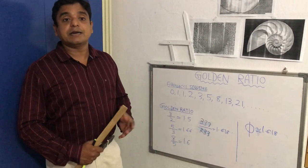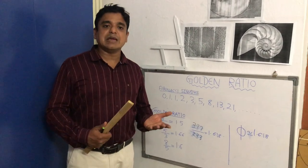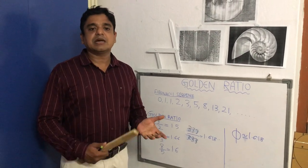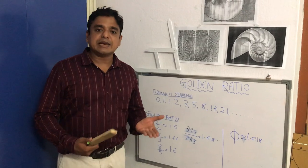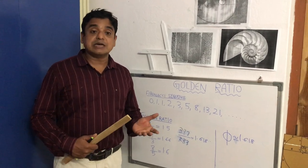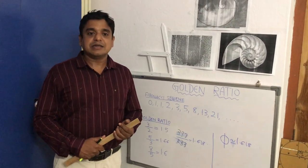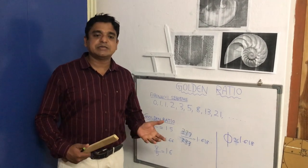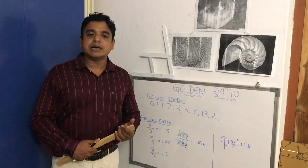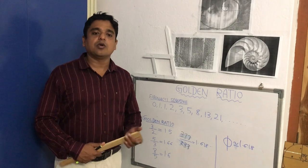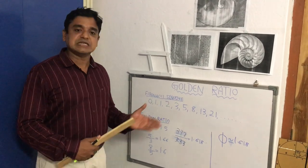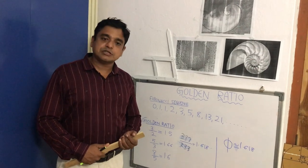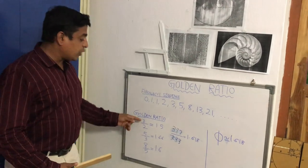Now you may have a doubt about what is the implementation of this Fibonacci Sequence in our society and in our nature. One interesting thing is that before Fibonacci, God had gifted many objects and things which align with this golden sequence or Fibonacci Sequence. We will discuss that later. So let us first move to the golden ratio.